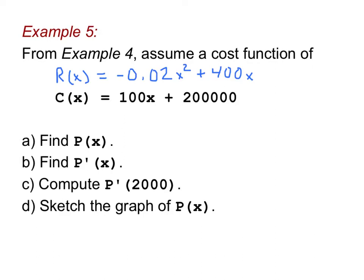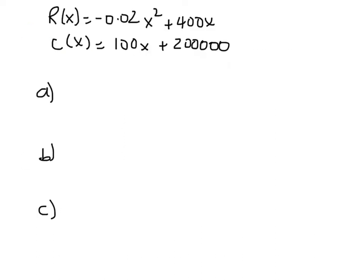So for part a, we're looking for the profit function P(x). We simply take the revenue function, which is -0.02x² + 400x, and we subtract the cost function. Now listen, it's important that we include these parentheses when we start.